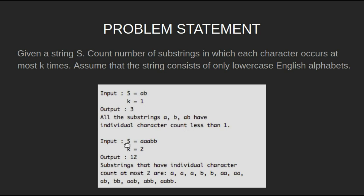For input string 'aabbb' with k equal to 2, the output will be 12, as the substrings that have individual character count at most 2 include the individual characters a, a, a, b, b, as well as longer substrings such as aa, ab, bb, aab, abb, aabb, and others satisfying the condition.